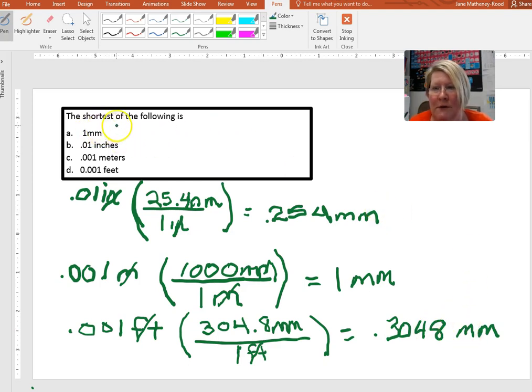So our choices are 0.254 millimeters, 1 millimeter, and 0.3048 millimeters. We can see that 0.01 inches is going to be the smallest of these four units.